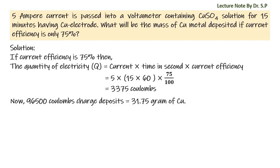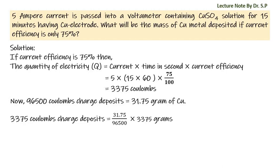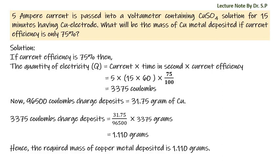Now, using the unitary method: 3375 coulombs of charge deposits 31.75 by 96500 into 3375 grams — that is 1.110 grams. Hence, the required mass of copper metal deposited is 1.110 grams.